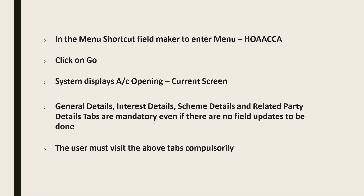The system displays the account opening current screen. The tabs you see are: General Details, Interest Details, Scheme Details, and Related Party Details — all are mandatory, even if there are no fields to update. Note these four tabs. Related Party Details is generally for joint accounts, but even for a single account this tab must be visited — it is mandatory.